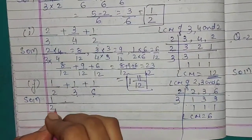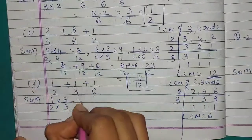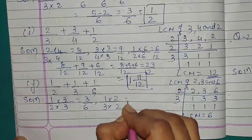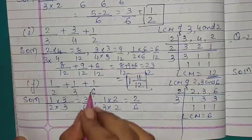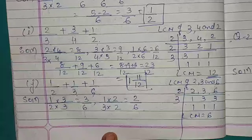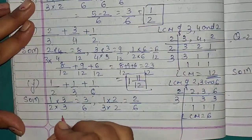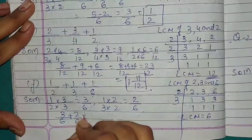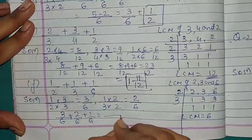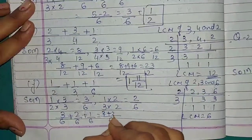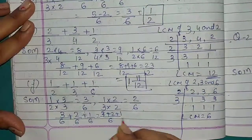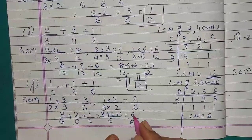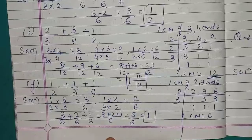We make denominator 6. For 1 upon 2, multiply by 3 upon 3: 3 upon 6. For 1 upon 3, multiply by 2 upon 2: 2 upon 6. And 1 upon 6 is already with denominator 6. Adding: 3 upon 6 plus 2 upon 6 plus 1 upon 6. 3 plus 2 plus 1 equals 6 upon 6. Answer is 1.